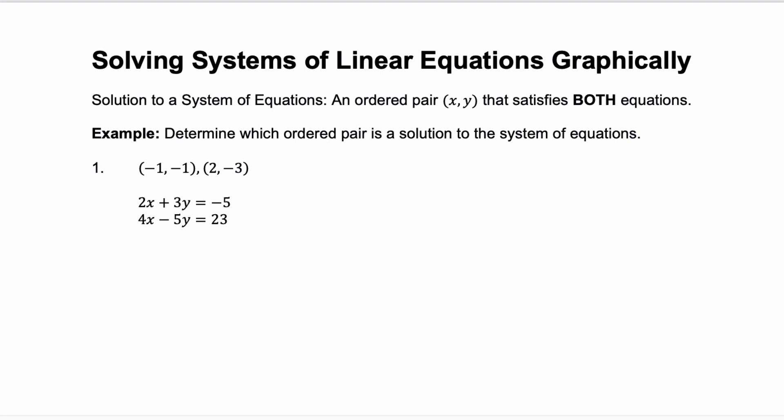So what is a solution to a system of equations? Well, a solution is an ordered pair — remember that's an x-y coordinate — that satisfies both equations. So that ordered pair needs to work for both of the equations in the system. Let's look at an example where we're given two different ordered pairs and a system of linear equations, and we're trying to identify which ordered pair, or maybe both, are solutions. To do this, we're going to plug in the given ordered pair into each of the given equations and verify that we get a true statement.